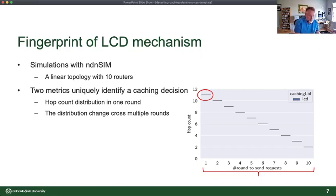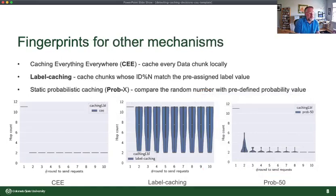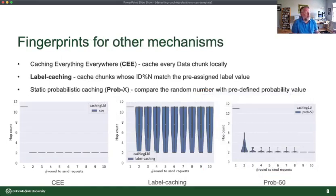Now, if you look at other caching mechanisms, you get other fingerprints. So cache everything everywhere. The answer is once you ask, everything is cached at the nearest router, everything is handled by the nearest router because it's cached at every router in the path. So what you see is the first request, long delay, and everything else, bam, it's right next to you.